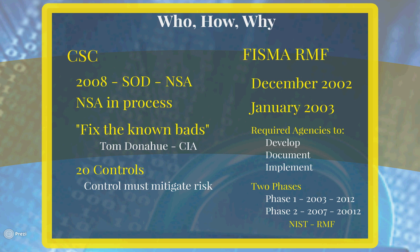There are 20 controls, and each specific control was designed to counteract something known as an issue. So each particular control is supposed to be a priority — it should actually mitigate a specific risk.